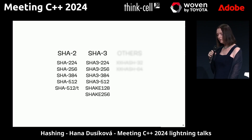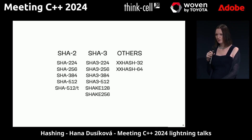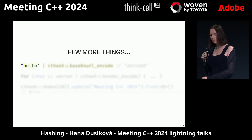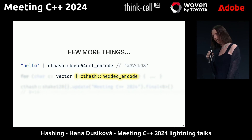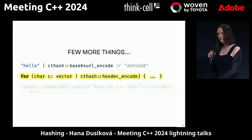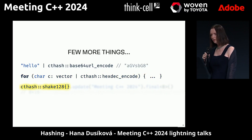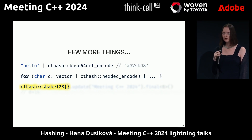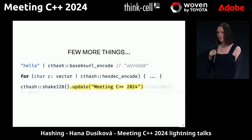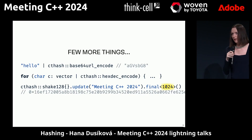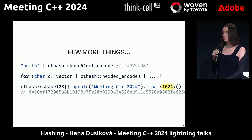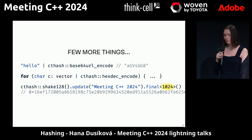The SHA2 family is supported, the SHA3 family also, and xxhash because I need it for some project, and a few more things. You can take a string and pipe it into base64 encode and get this. Or you can take a vector and pipe it into hexadecimal encode if it's a byte-like type, and get chars out of it lazily. Or you can take the SHAKE128 function, which is an SHA3 family hash, provide some input, finalize it, and get only 8 bytes if you only care about 8 bytes — if you need just a short hash. Or you can ask for 1024 bytes. It's not finished yet, but you can actually use it as a random number generator based on that hash function, because it's infinite — it can give you an infinitely long stream of hash values. And that's all.